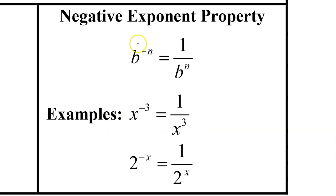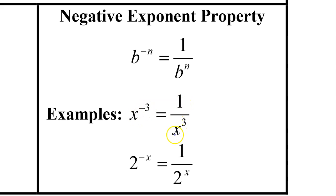Don't forget how negative exponents work. A negative power drops you down to the denominator. So b to the negative n power is the same as 1 over b to the n power. X to the negative 3 power is the same as 1 over x to the third power. And 2 to the negative x power is the same as 1 over 2 to the x.